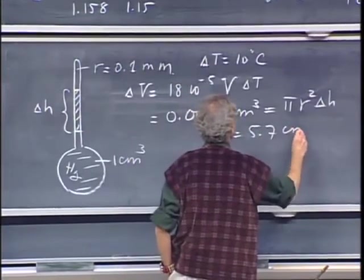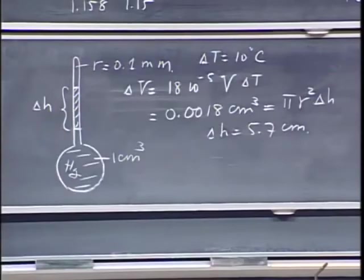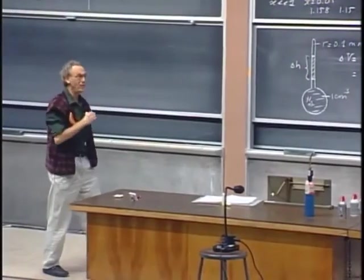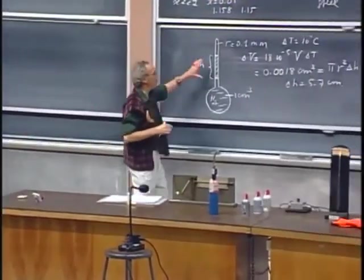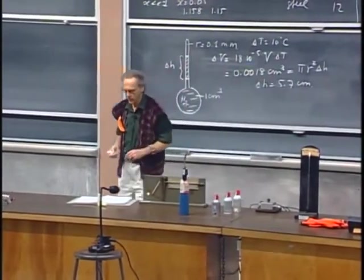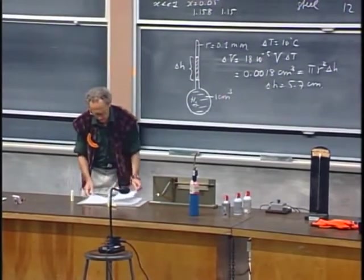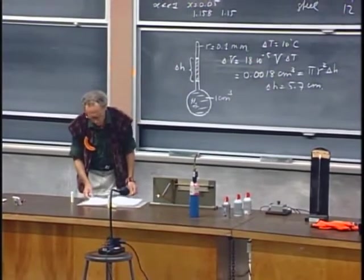That's huge. That's very easy to see. For ten degrees in increase in temperature, you get 5.7 centimeters. So for one degree centigrade, you would get 6 millimeters. It's very easy to see. And so that's the idea behind a mercury thermometer.